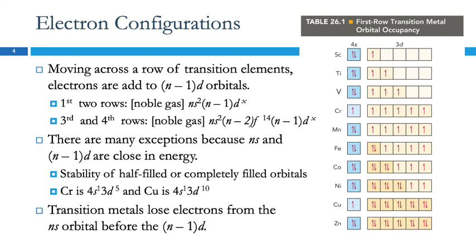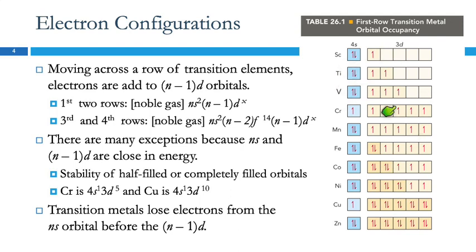So what does this mean? In period 4, the electron configuration would be 4s2, 3d-something. So here we've got scandium, titanium, vanadium — that first row of transition metals — and this is how they fill up their orbitals. We're filling the 4s first and then the 3d's are filling in.